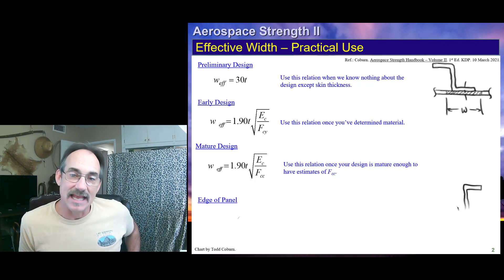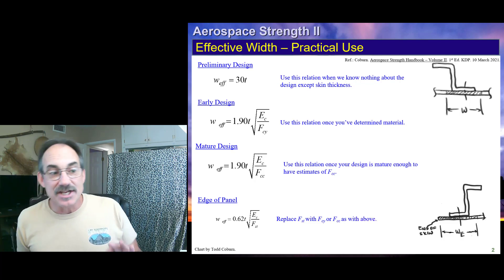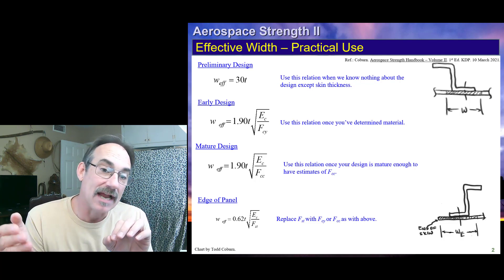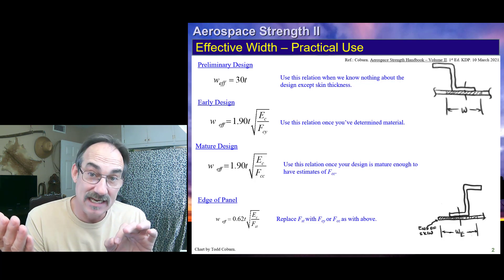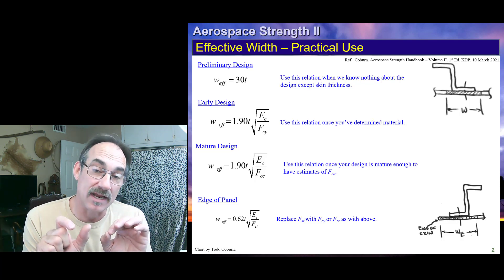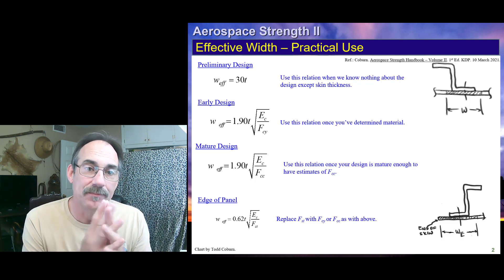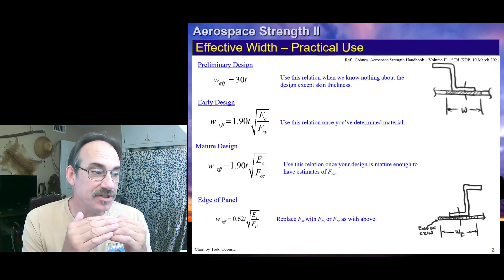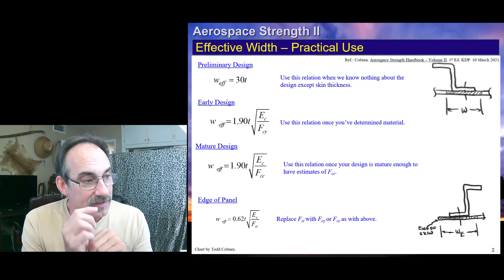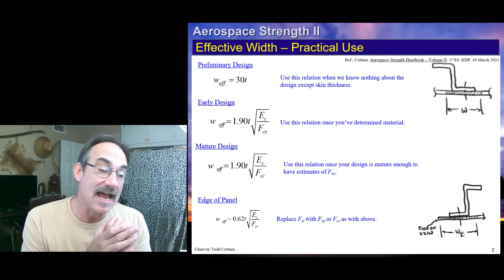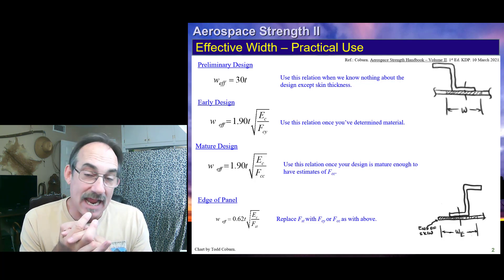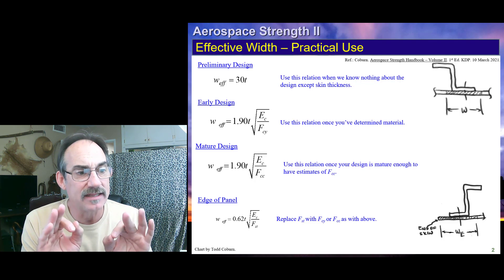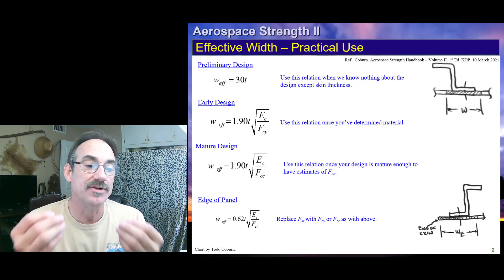Okay, now what happens if we're at the edge of a panel? If we're at the edge of a panel, then we use this equation. This equation results from going back to the basic buckling equation we started lecture 19 with and plugging in 0.43 for the edge condition for a simple, free panel. Now, that gives us a total effective width for the last fastener near the edge, W_E, of this value. It changes out. Instead of 1.9, we have 0.62. This actually is the total effective width about that fastener.